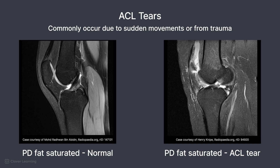On the first image, you can see the dark ACL fully intact. On the second image, you can see a complete tear with a wavy discontinuous ligament and surrounding edema.